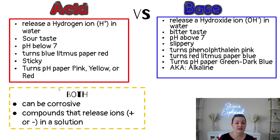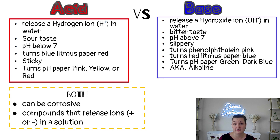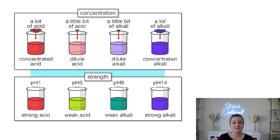Things that acids and bases both have in common: they can both be corrosive if they're strong enough, and as compounds they release ions — whether positive or negative — into a solution.